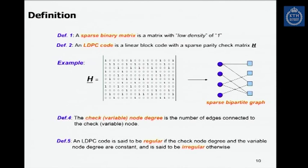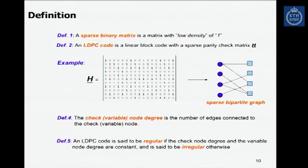By definition, a sparse binary matrix is a matrix with a low density of ones. A low-density parity check code is simply a linear block code where the parity check matrix h is sparse — a small number of ones and a larger number of zeros. Since the matrix h is sparse, the bipartite graph associated to h is also sparse, meaning there are few connections and few edges.